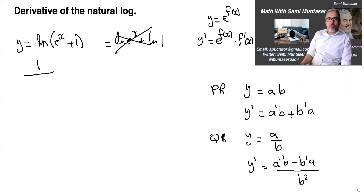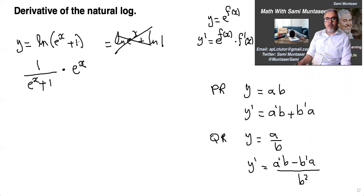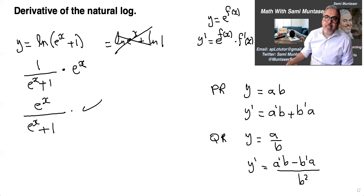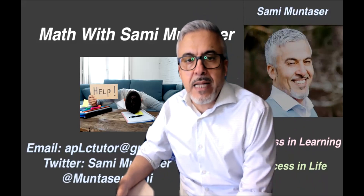The correct answer: the derivative of ln is 1 over (e to the x plus 1), times the derivative of (e to the x plus 1). The derivative of e to the x is just e to the x, and the derivative of 1 is 0. So multiplying e to the x into the fraction gives e to the x over (e to the x plus 1). That's it for these four questions — thanks for watching, until next time, bye bye.